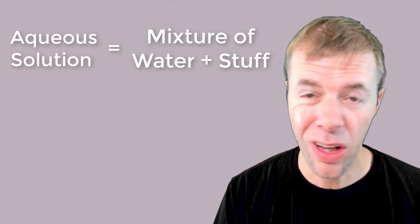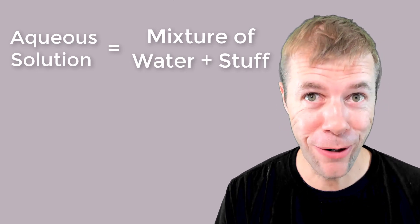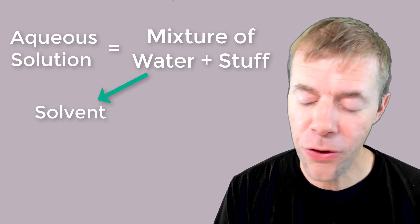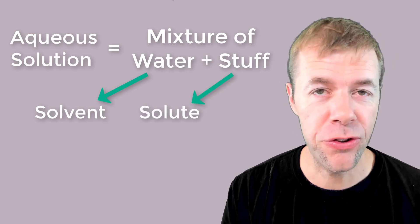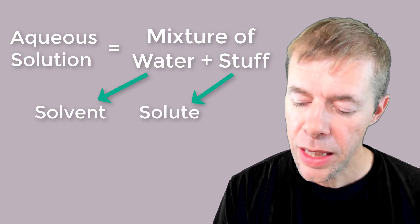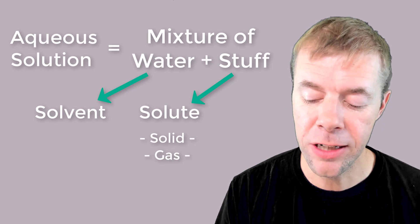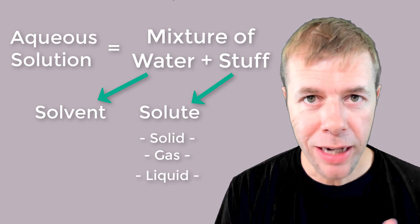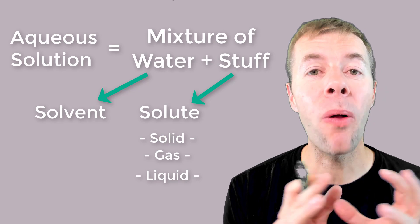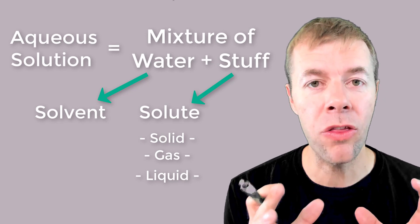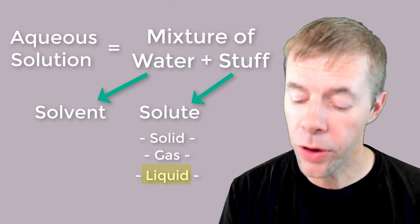Aqueous solutions are water plus stuff. The water is called the solvent and the stuff is called the solute. This could be a solid, a gas, or a liquid. A lot of my examples today are going to be with solids, but they can apply to anything — this could also be done with a gas or a liquid.